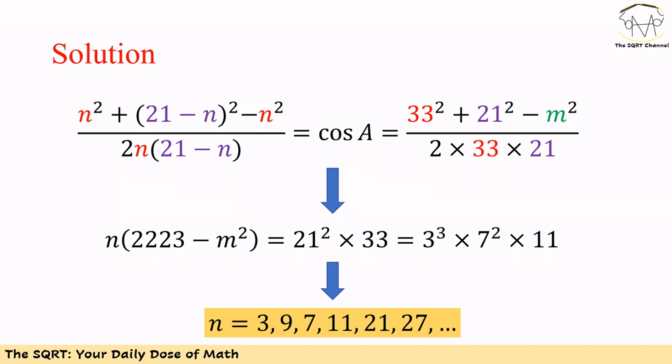Alternatively, we can say N is 9. In that case, 2223 minus M² is going to be 3 times 7² times 11. Obviously there are some other possible cases as you can see here.